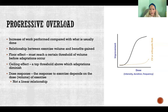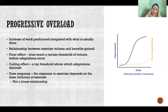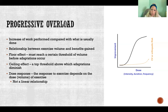We have to ask the body to do something it couldn't already do — something beyond what we did yesterday — to stimulate it to send resources there, make the muscles stronger, build more blood vessels, and make whatever adaptations are necessary so that it can do that level of volume and intensity more easily next time. That's where the changes come in, so we want to progressively overload.